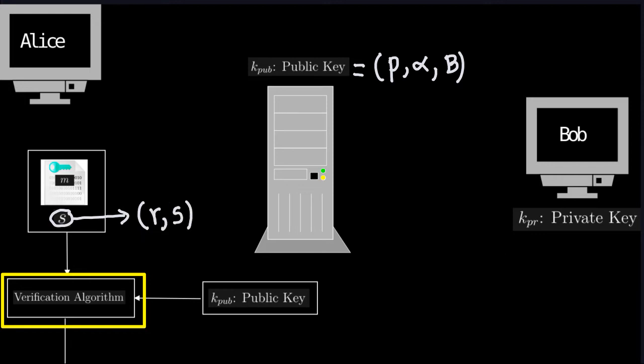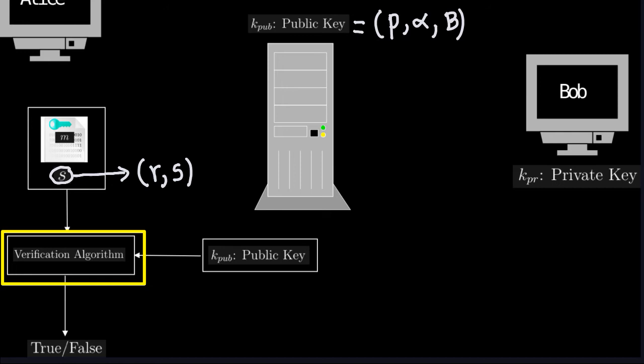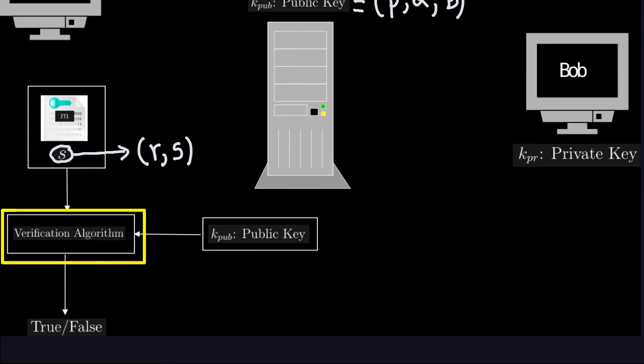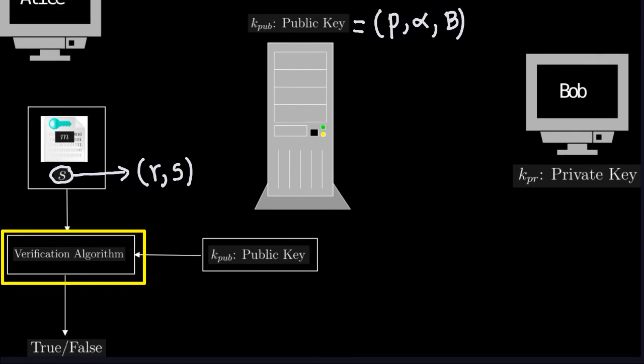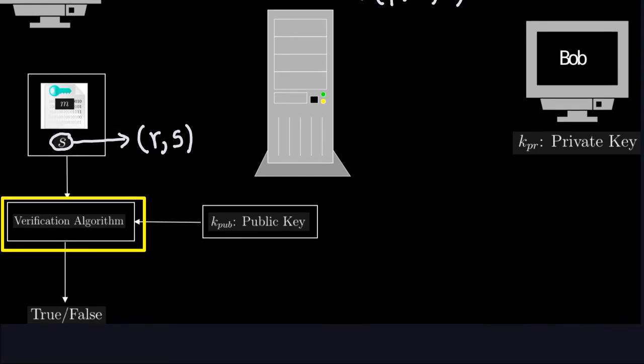There's a way to compute the R and the S, and we did that in the previous example. We'll come back to the values in the previous example. The public key is an input of the verification algorithm. And the output will be true or false, depending on whether this pair of numbers correspond to the signature or not.